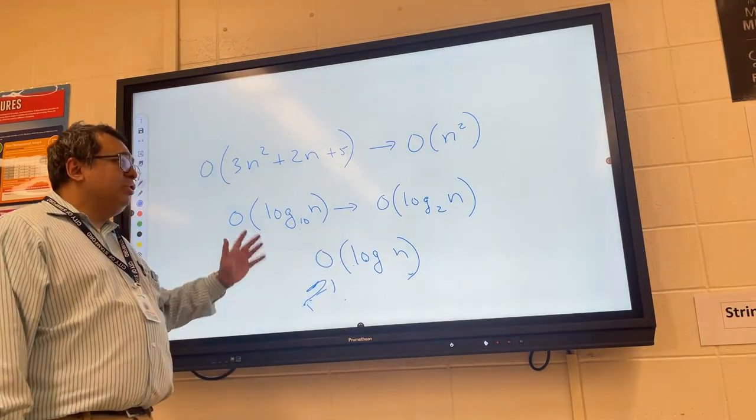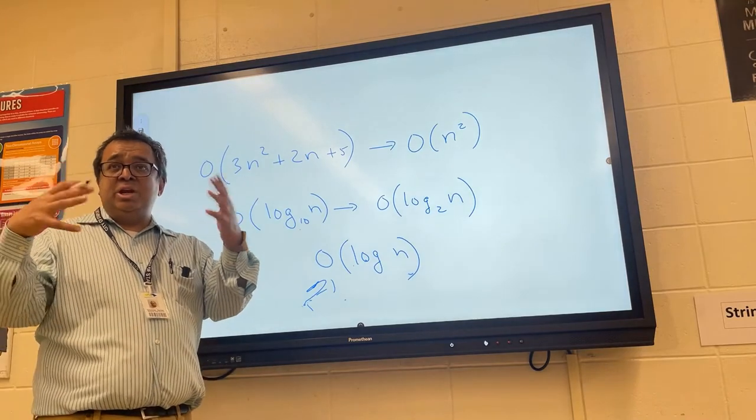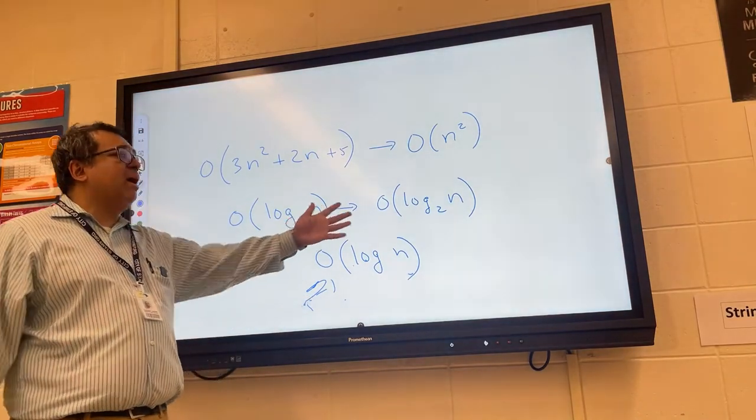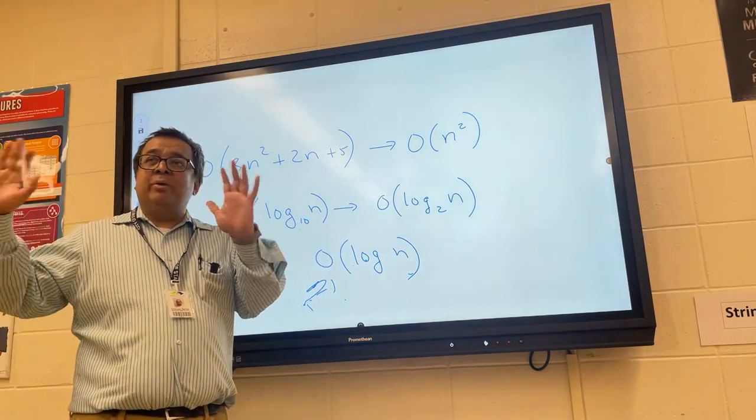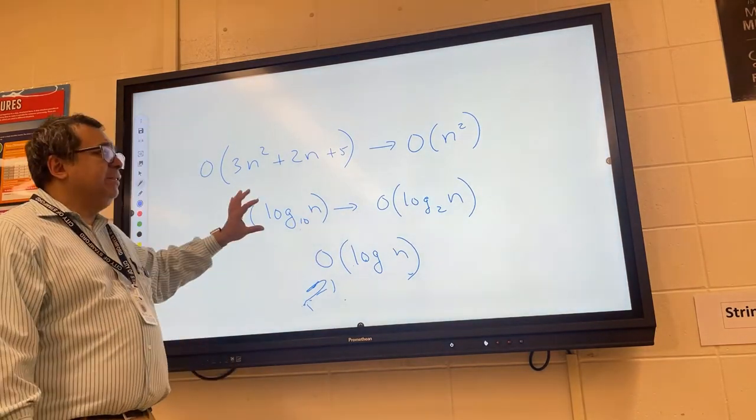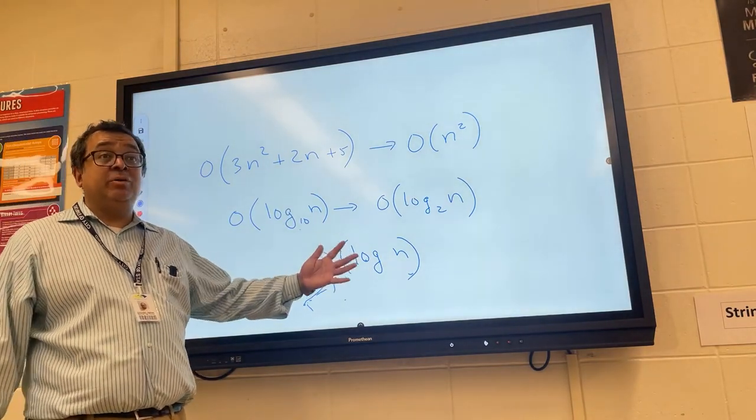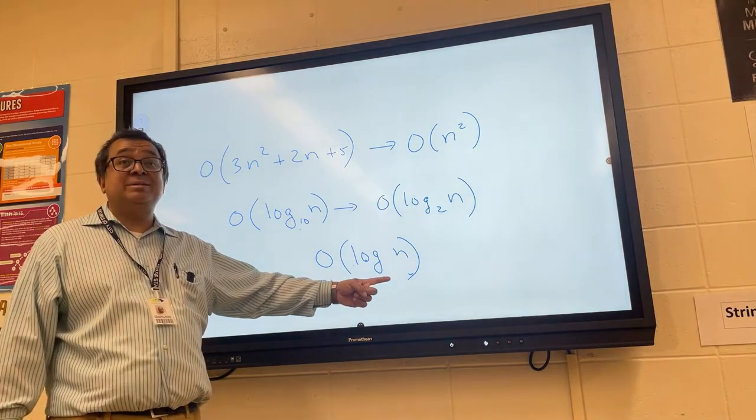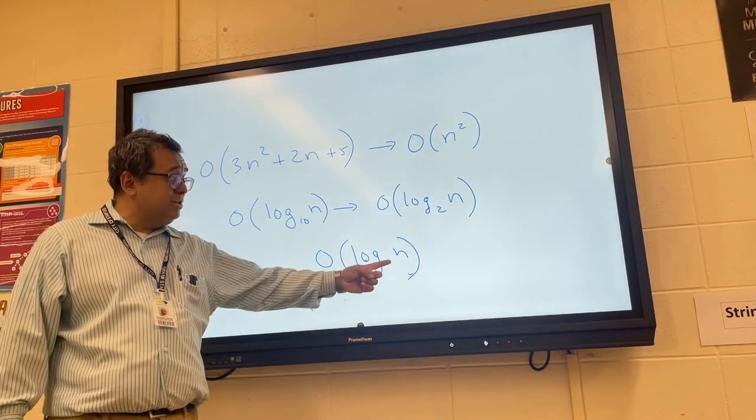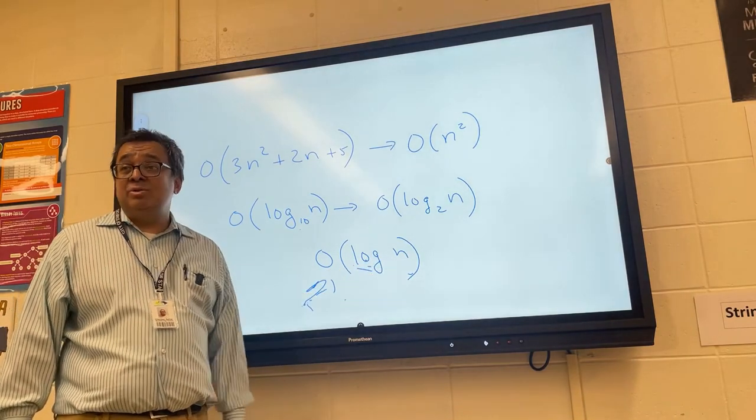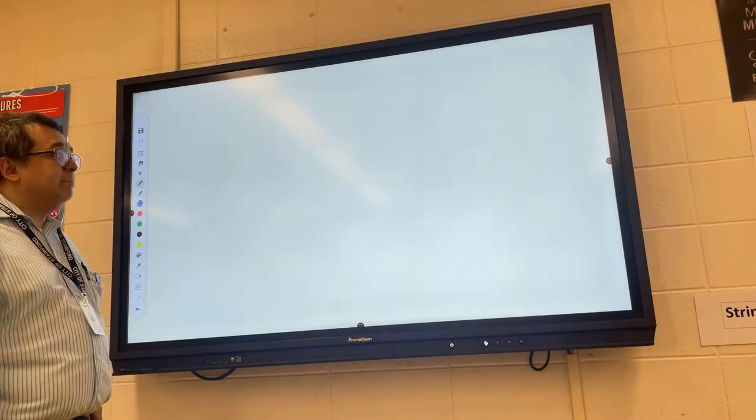So you can change the base on a logarithm using the change of base rule, and the only thing that's changing are the constants. And so that's why you can go from one log to another log. If you don't want to worry about it, you don't have to. The only thing you want to keep in mind is that when we write logarithm functions in Big O notation, we don't use a base because we don't care about the base. We just write it generically with the word log, and it can mean any base you want.